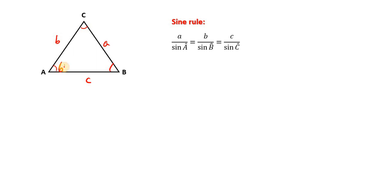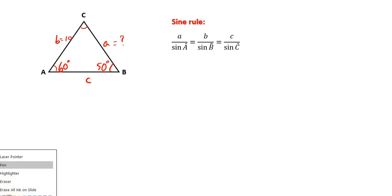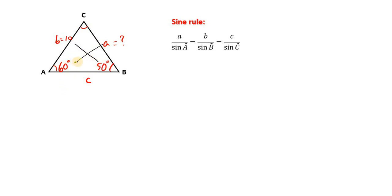Let's assume that we know this angle to be 60 degrees, this side we do not know, this angle we know — let's say this is 50 degrees — and this side we know to be 10 units. We're asked to find the length of side A. Notice that we can actually make an X out of this. At the end of one line, we have one value known and the other end one value unknown, so I call that the half pair.